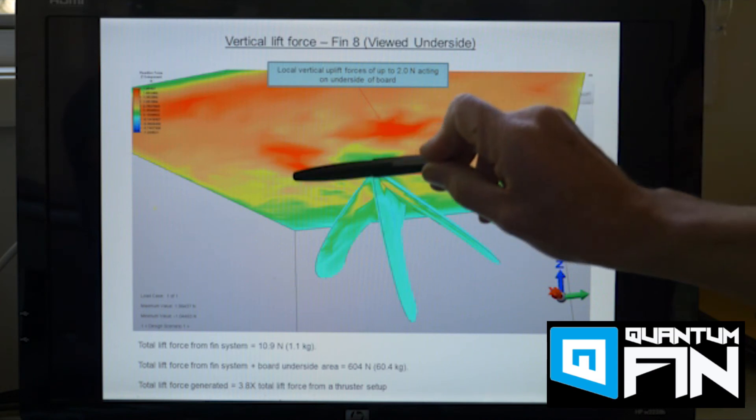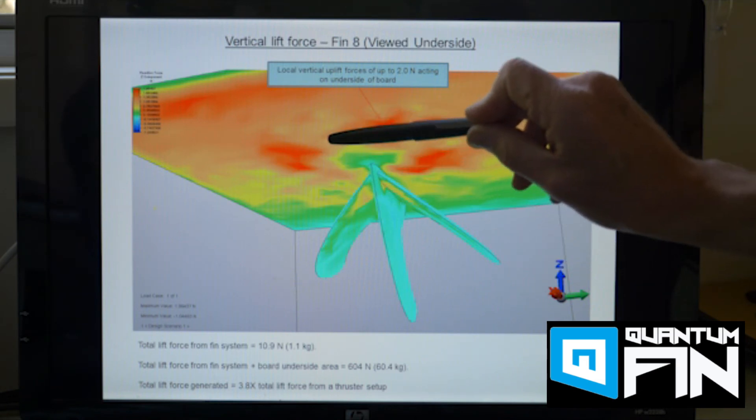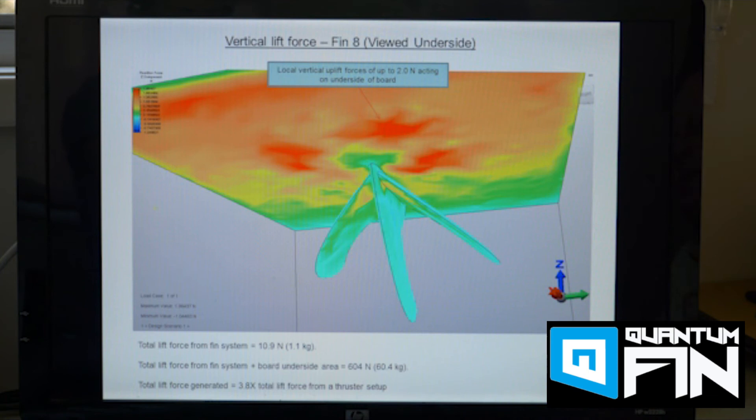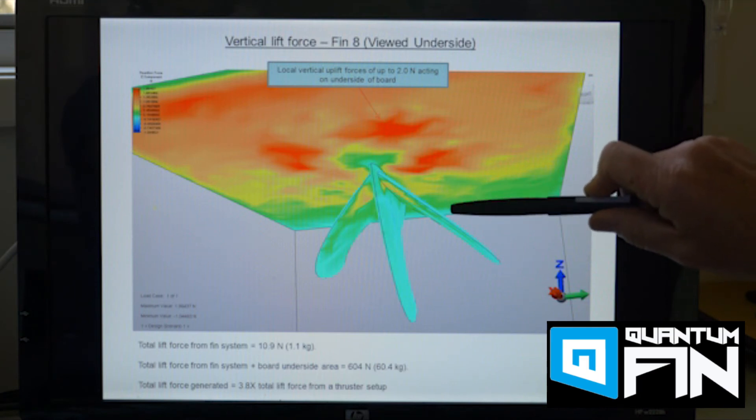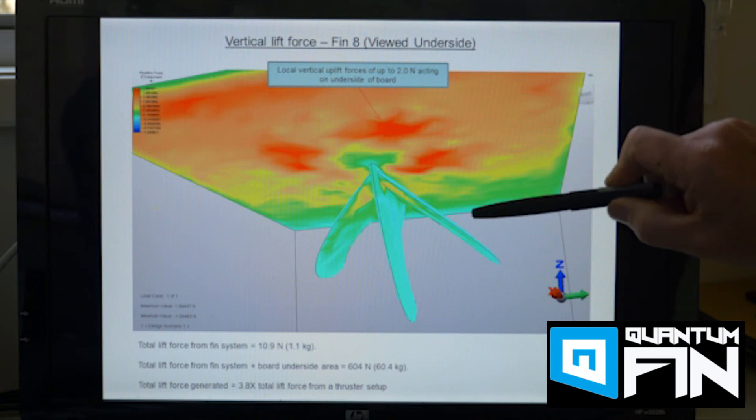So these are these big red areas which you can see acting on the underside of the board which is this additional lift force. And so the computer software tells us that the total amount of lift force that's generated in this case with the Q fin design is in fact now about 60 kilograms which for an 80 kilogram person is about now three quarters of their body weight.